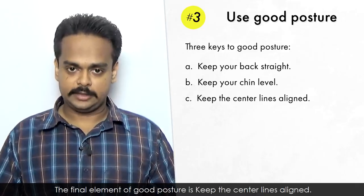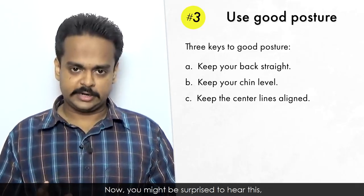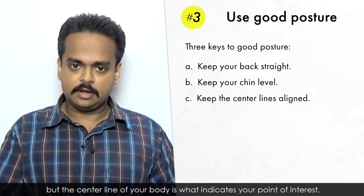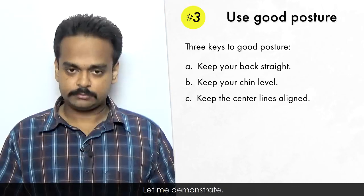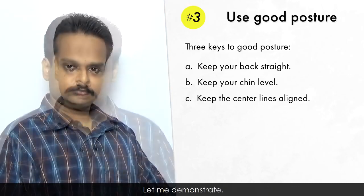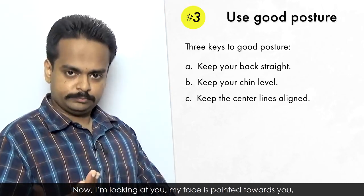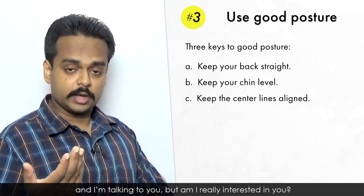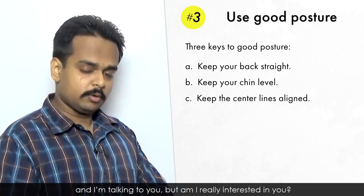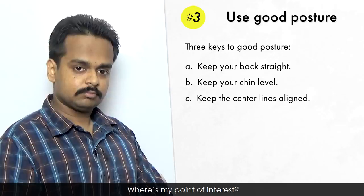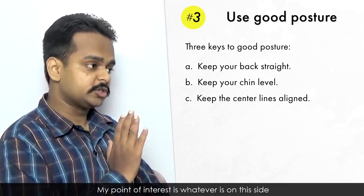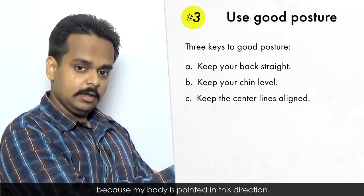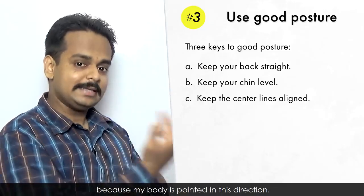The final element of good posture is keep the central lines aligned. Now you might be surprised to hear this, but the central line of your body is actually what indicates your point of interest. Let me demonstrate. Now I'm looking at you. My face is pointed towards you and I'm talking to you, but am I really interested in you? Where's my point of interest? My point of interest is whatever is on this side, because my body is pointed in this direction.